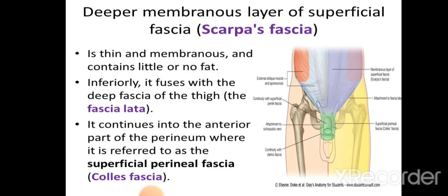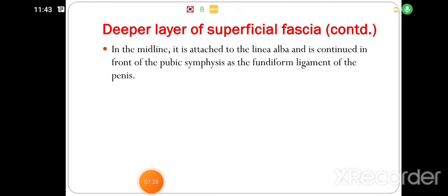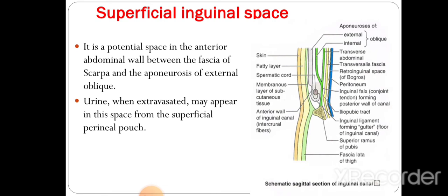The membranous layer of the superficial fascia is known as Scarpa's fascia. It continues as fascia lata of the thigh, and in the perineal region it forms Colles' fascia. In males it also forms the fundiform ligament of the penis. The deep fascia is absent in the anterior abdominal wall because it is formed by a collagenous fibrous membrane which is non-elastic and might prevent bulging of the wall. The superficial perineal space is the space between the membranous layer of the superficial fascia and the aponeurosis of the external oblique muscle; urine when extravasated may appear in this space from the superficial perineal pouch.